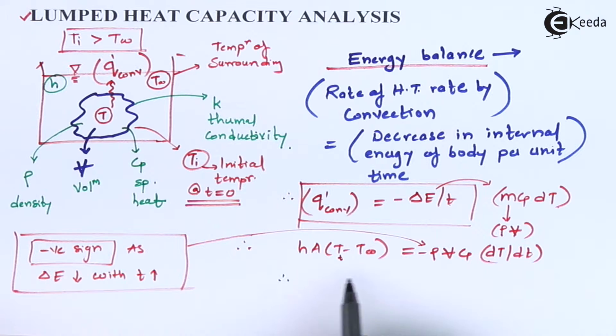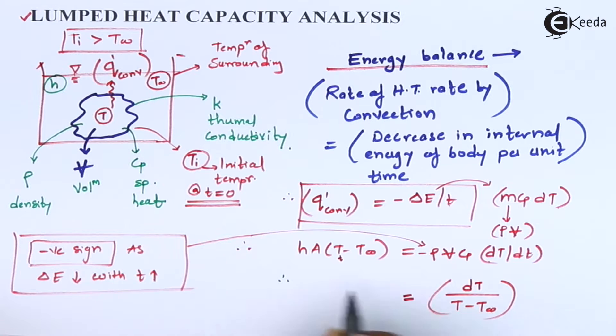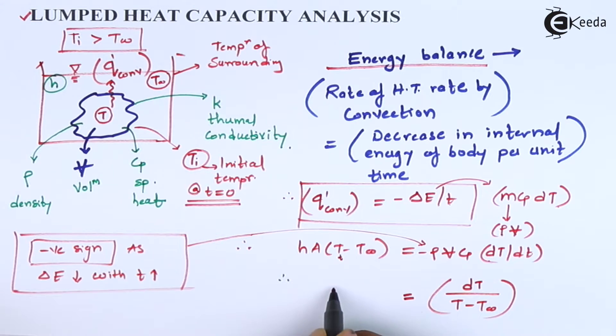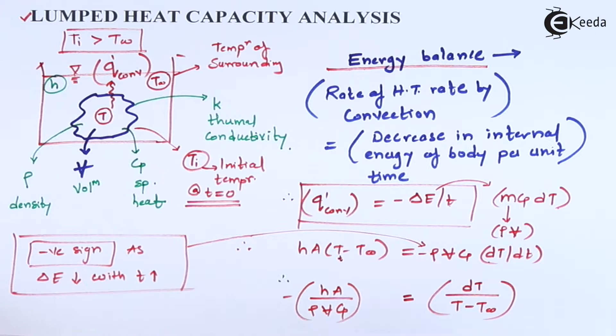Now this can be solved by the variable separation method. Let us start doing it. Let us take this temperature parameter to the right hand side, so what do we have? We can write this as dt upon T minus T infinity, instead of writing T small t, I will simply write this as T only, is equal to, now all the other parameters will come over here, HA upon rho V CP with a negative sign into dt.